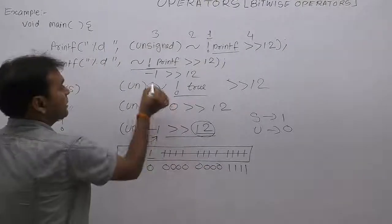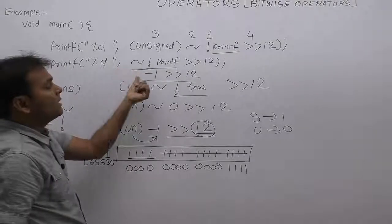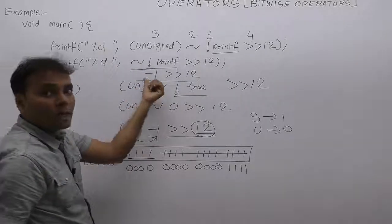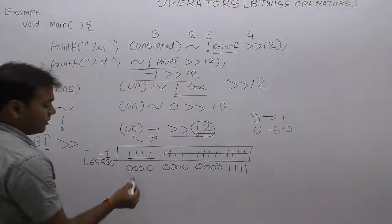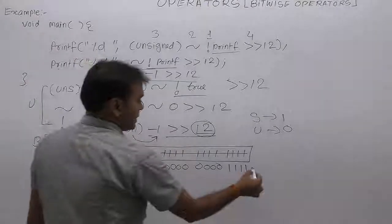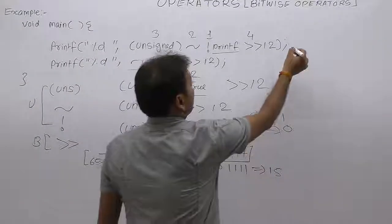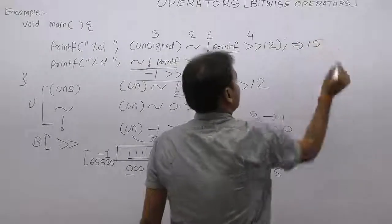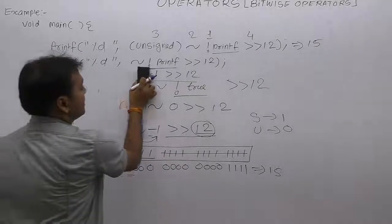But in the second case, there is no type casting. Therefore, in the second expression, the inserted bits are all 1s. Now, for the first case result: the remaining four bits with all zeros inserted — the sign bit is 0 and the decimal value is 15. The output of the first line is 15.